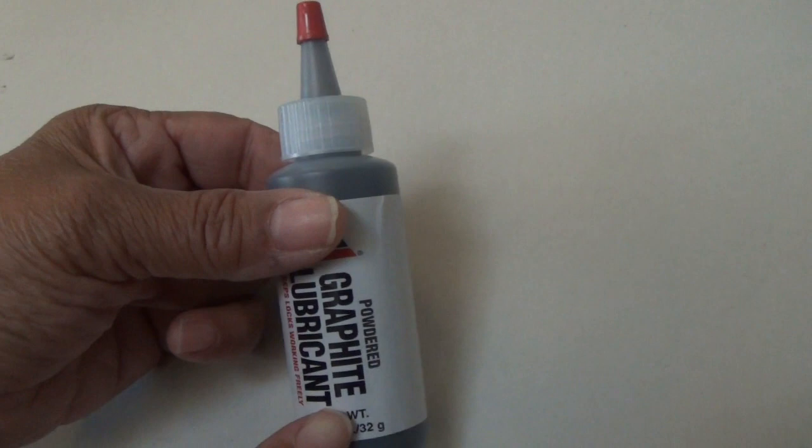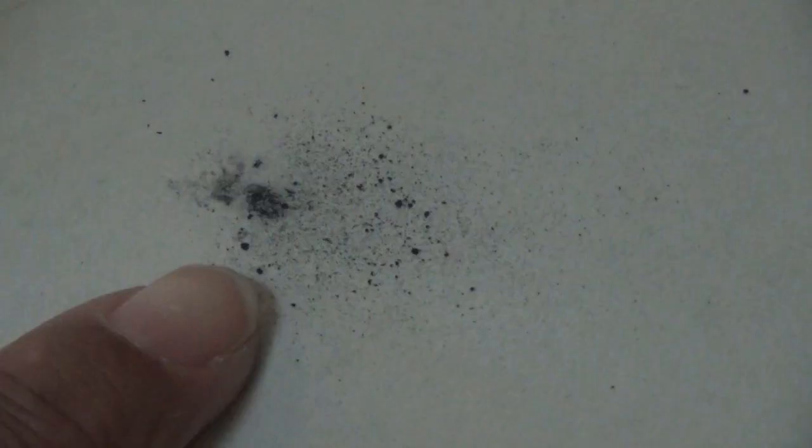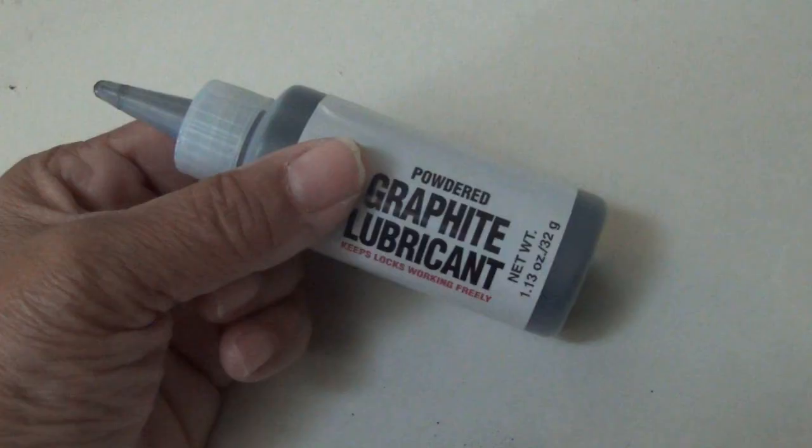Ideally, this is what you want to use. It's powdered graphite lubricant. Comes in a bottle. I'm gonna open it up here so that you can see what it looks like. I'm gonna just squeeze it out a little bit. So this is really a fine powder, as you can see. Okay, so let's put this to work.